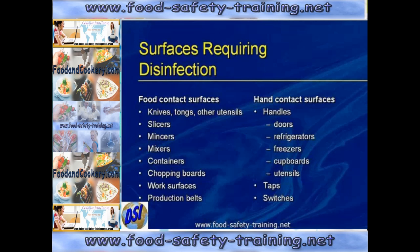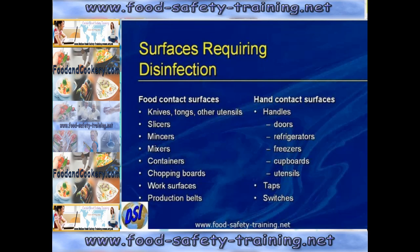Food contact surfaces include knives, tongs, other utensils, slicers, mincers, food containers, chopping boards, work surfaces, and production belts. Hand contact surfaces include things like handles of doors, fridges, freezers, cupboards and utensils, and also taps and switches.